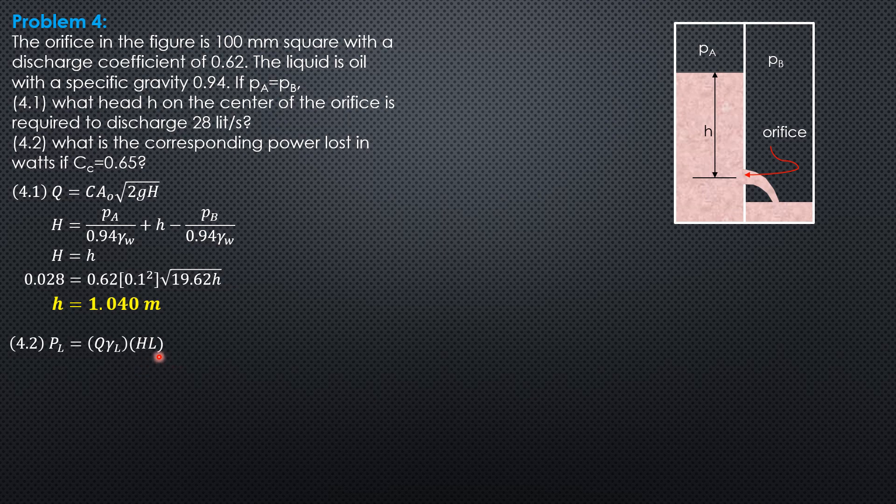The head loss is h times quantity 1 minus Cv squared. Cv is computed from the relationship: coefficient of discharge equals Cc times Cv. So 0.62 equals 0.65 times Cv, giving Cv equals 62 over 65.